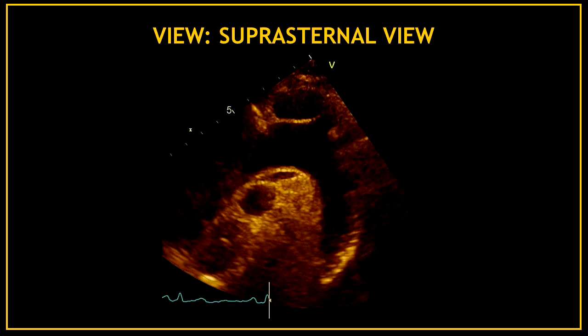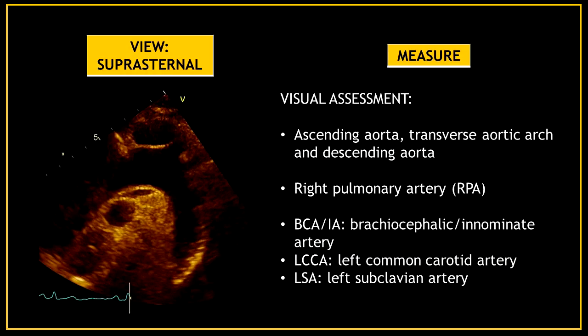This is the suprasternal view, also known as the suprasternal notch view. First, obtain the suprasternal view and perform a visual assessment of the ascending aorta, aortic arch, and descending aorta. In this view you can also visualize the right pulmonary artery, and don't forget to assess the brachiocephalic artery, the left common carotid artery, and the left subclavian artery.